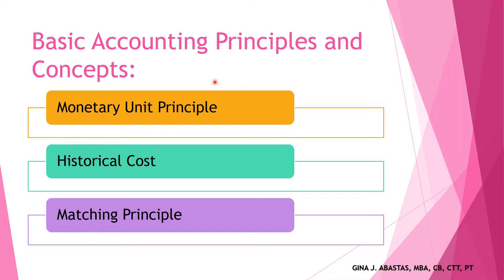Next is the historical cost principle. All business resources acquired should be valued and recorded based on the actual cash equivalent or the original cost of acquisition — not the prevailing market value or future value, but the original cost of acquisition. The exception to this rule is when the business is in the process of closure and liquidation.